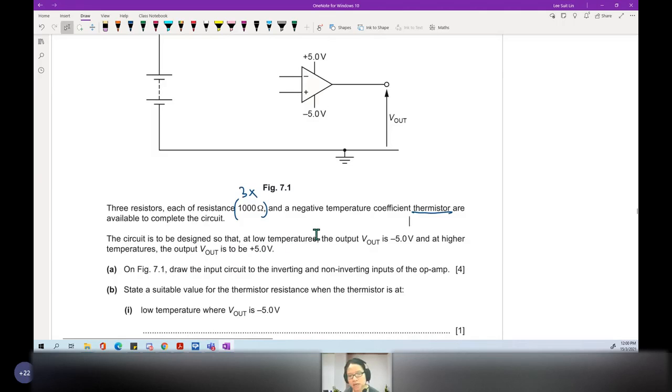The circuit is to be designed such that at low temperature, V out is negative 5V, and at high temperature, V out is positive 5V. Draw the input circuit, which is your potential divider, to the inverting and non-inverting input of the op-amp.